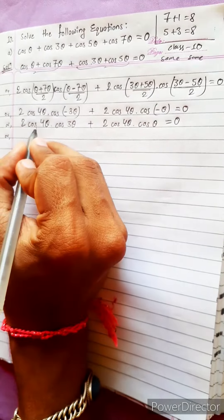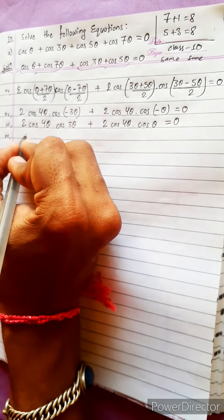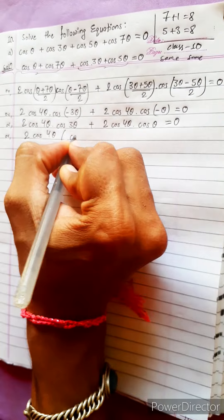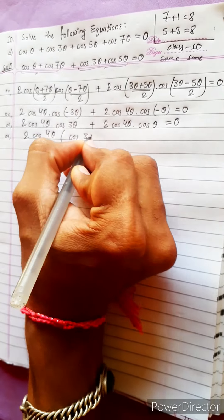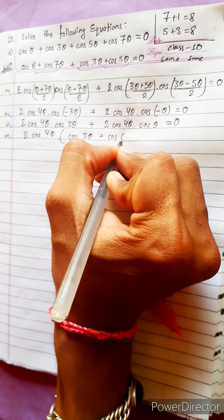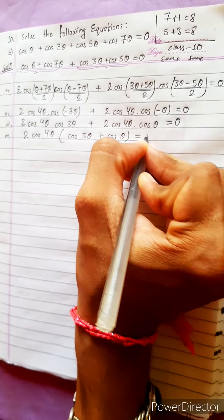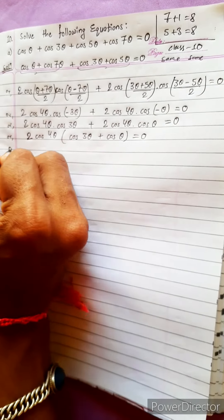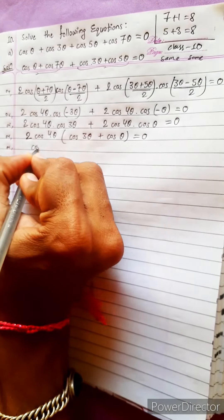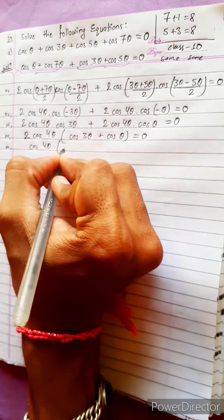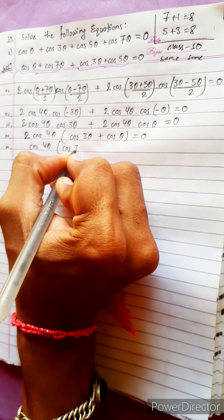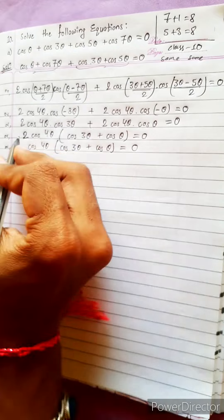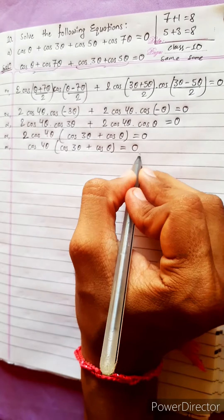Now 2 cos 4θ is common. Taking 2cos(4θ) as a common factor, we get 2cos(4θ)·[cos 3θ + cos θ] = 0. Dividing by 2 (since 2 ≠ 0), we have cos(4θ)·[cos 3θ + cos θ] = 0.